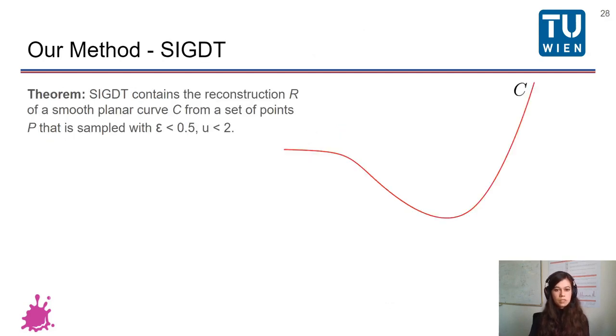Moreover, we have presented a proof that our proximity graph contains the reconstruction of a smooth planar curve if the curve is sampled with epsilon 0.5 and non-uniformity ratio of 2. And now for the curve in red, we have the consecutive samples S0, 1, 2 and 3. And we want to show that the edge between the two consecutive samples S1 and S2 is part of the SIGDT.